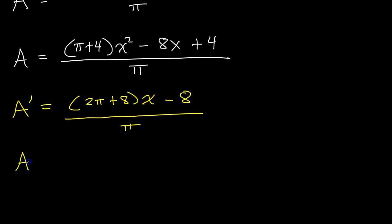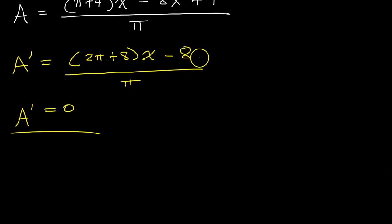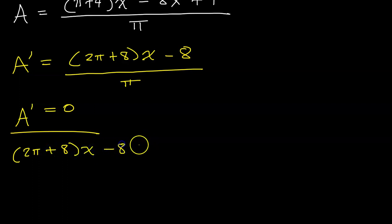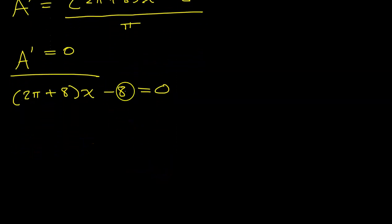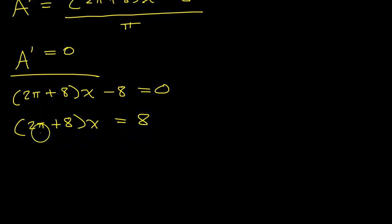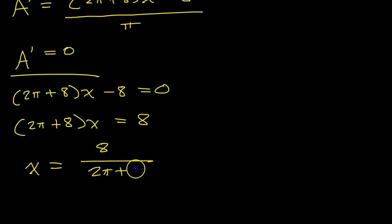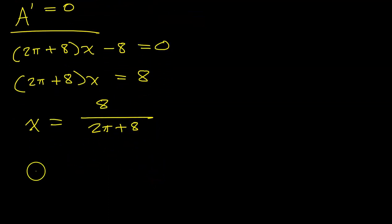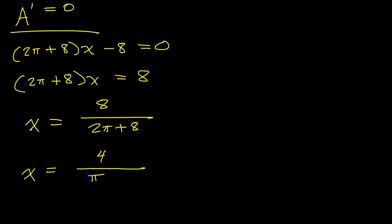To find the critical value, set the derivative equal to 0, which means setting the numerator equal to 0: (2π + 8)x − 8 = 0. Adding 8 to both sides: (2π + 8)x = 8. Dividing both sides by (2π + 8): x = 8 / (2π + 8). Since all three terms are divisible by 2, that simplifies to x = 4 / (π + 4). This is the only critical number.